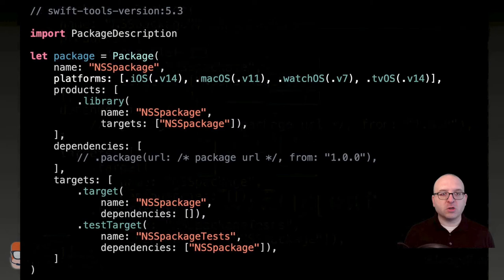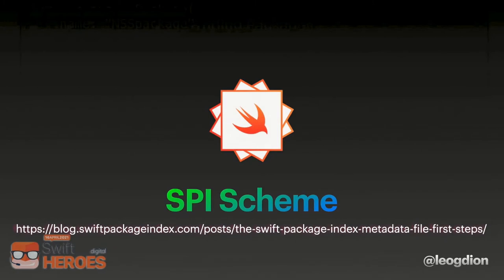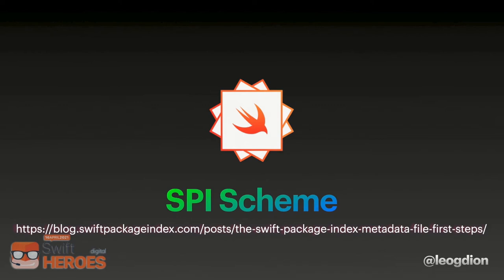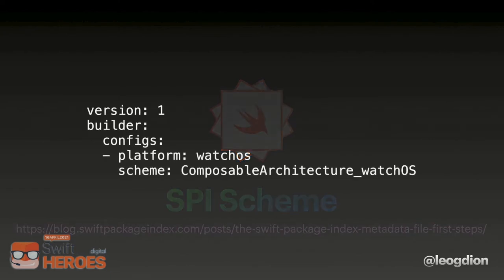There are a few ways of specifying platform support. You can simply add a line to the Swift package that says what platforms and versions you support, though this is only available for Apple operating systems. Something to look at is how Swift Package Index offers support — it uses an SPI file, which is a YAML file. If you want to support different Docker images or require certain apt packages installed on your Linux machine, an SPI file is a great way to do this. There's a great example of how the folks at Point-Free use that with their Composable Architecture package to specify watchOS support.